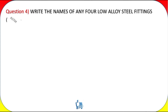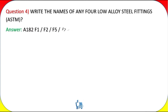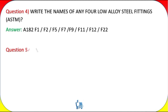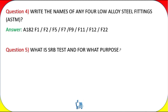Question 4: Write the names of any four low alloy steel fittings. Answer: ASTM A182 F1, F2, F5, F7, F9, F11, F12, F22.